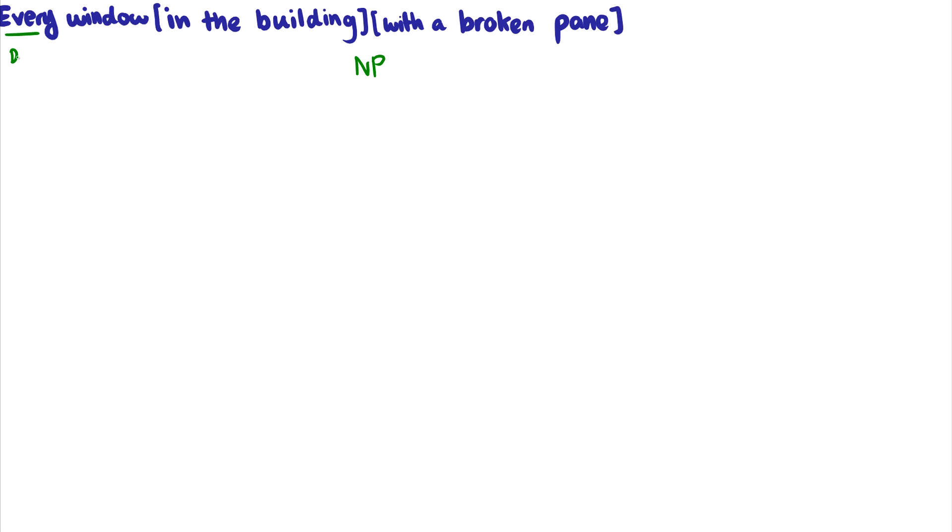In this video, we're going to do three practice sentences in X-bar theory. The first sentence demonstrates a double adjunct: 'Every window in the building with a broken pane.' This is just a noun phrase, so we'll begin with an NP. The first thing to point out is that 'every' is considered a determiner — sometimes called a quantifier — and determiners are daughters of NPs and sisters to N-bars.